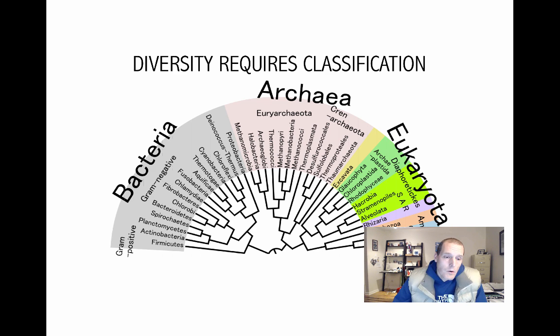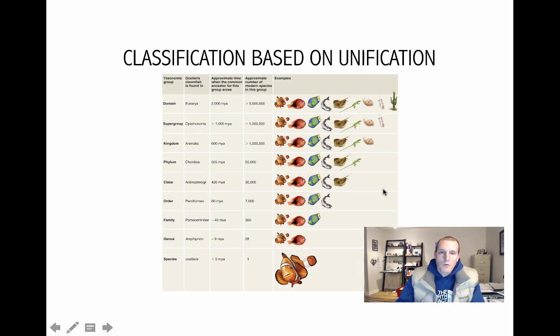And so, we get all this diversity from descent with modification. And that requires classification. That means we've got to put things in groups. And here, we're putting things in groups based on evolutionary relationships. And that is probably the best way to do it. So, let's look at the most conventional way that that is done.